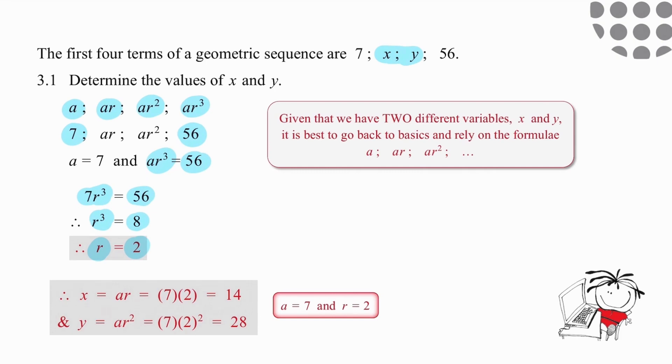Now we need to generate both the x and the y values so going back to where we started we're simply going to work out ar which means we're going to multiply seven by two to get 14 and then we're going to go one more time and work out ar² by multiplying that answer by yet another two. So our x and y values are 14 and 28.